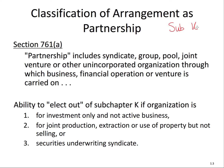The definition of partnership is defined in Section 761A. A partnership includes a syndicate, group, pool, joint venture, or other unincorporated organization through which a business, financial operation, or venture is carried on. That is a very broad definition — it can even be an activity. This is a key theme in tax: this definition is very broad.